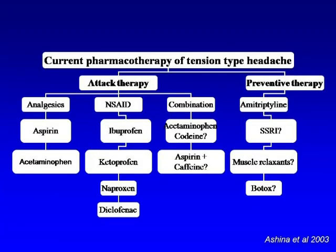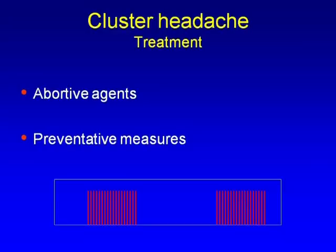For tension-type headache pharmacotherapy, triptans are not used. We use primarily analgesics, non-steroidals, or combination analgesics. Amitriptyline is the drug of choice for tension-type headache prevention; nortriptyline or mirtazapine (Remeron) can also be used. Botox has been shown NOT to be effective in chronic tension-type headache.